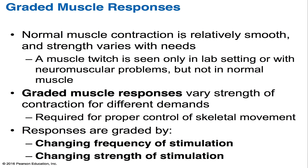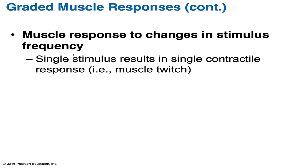Instead, in healthy muscles, contractions are relatively smooth and vary in strength as different demands are placed on them. These variations needed for proper control of skeletal muscle movements are referred to as a graded muscle response. In general, muscle contraction can be graded in two ways: by changing the frequency of stimulation, and by changing the strength of stimulation. We're going to look first at the muscle response to changes in stimulus frequency. A single stimulus results in a single contractile response — a perfect example is a muscle twitch.